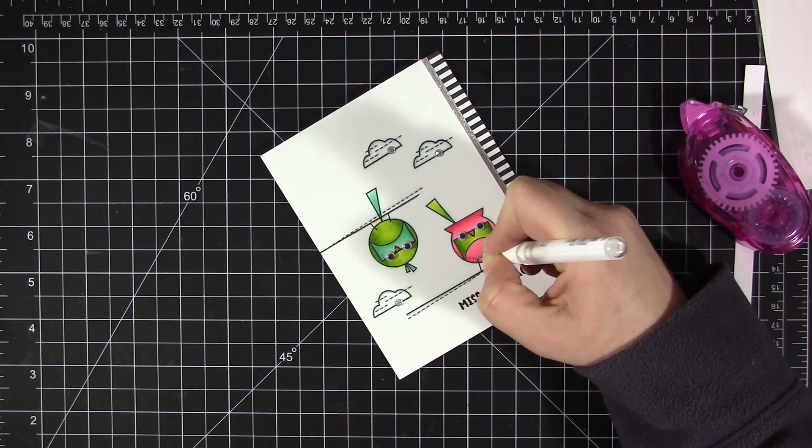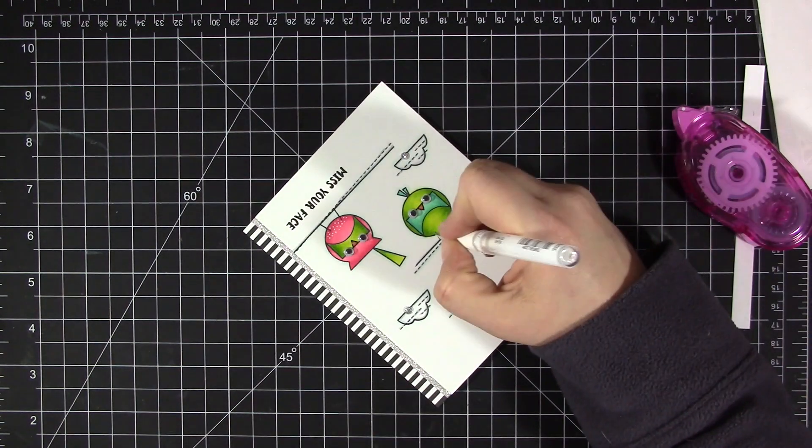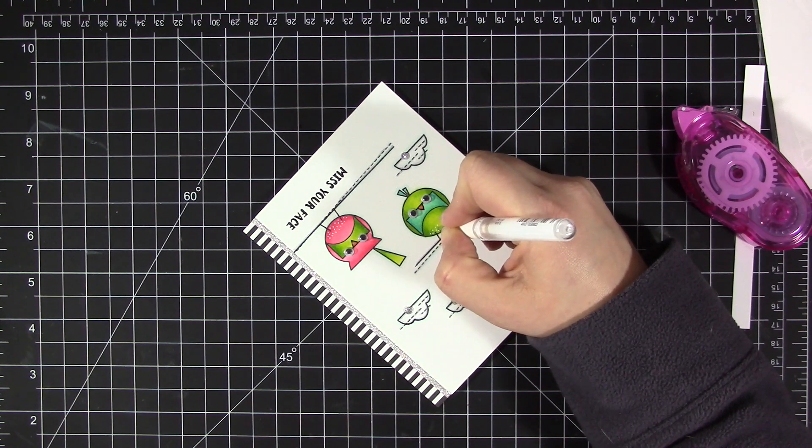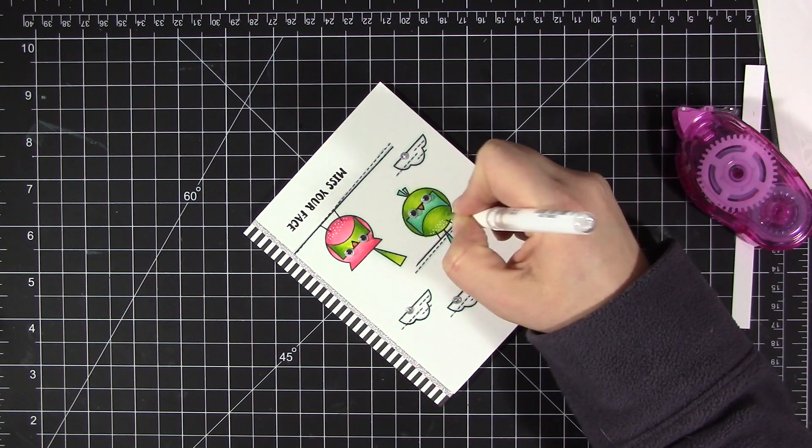I'm also going to add a little bit of glitter to the birds with my clear Wink of Stella once I have the dot detail done on the birds' bellies. Then I also added a little touch of glossy accents to both of their beaks just to give them a little bit of dimension and make them stand out.